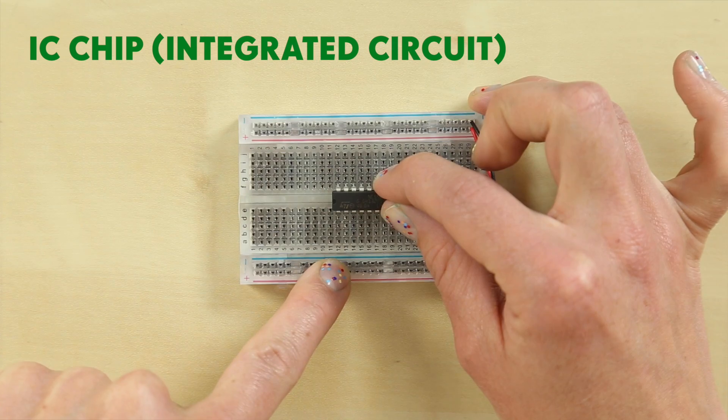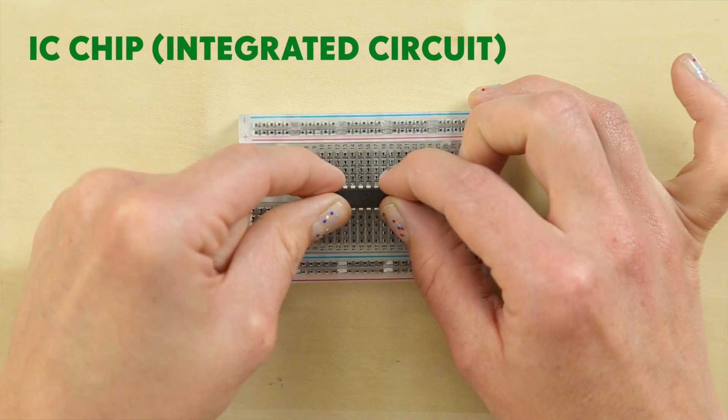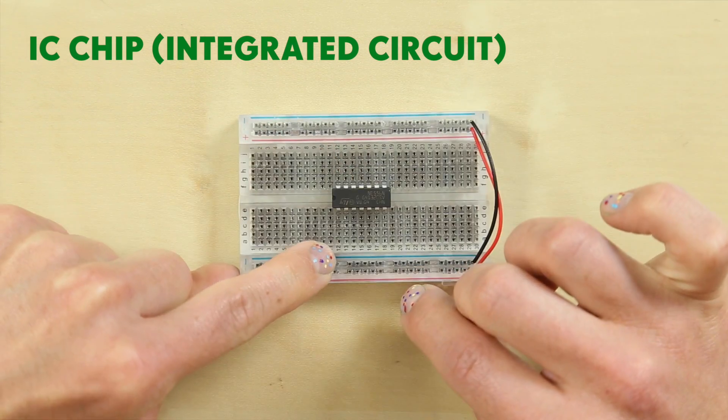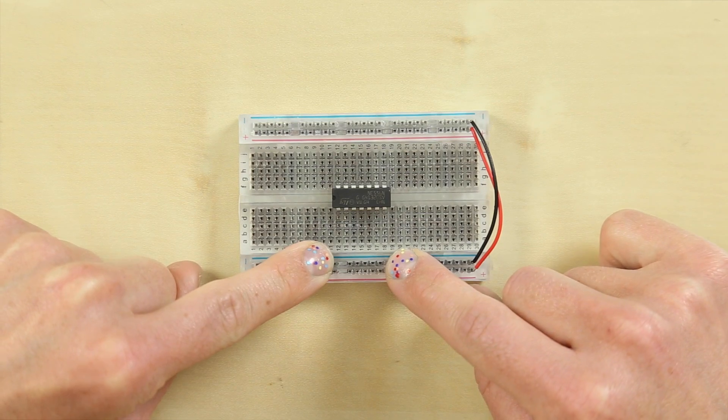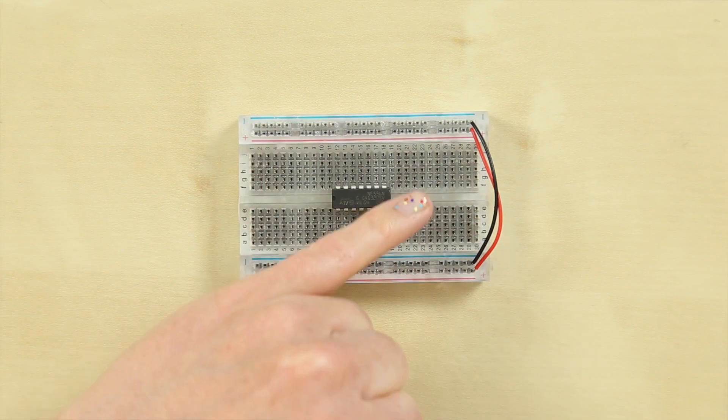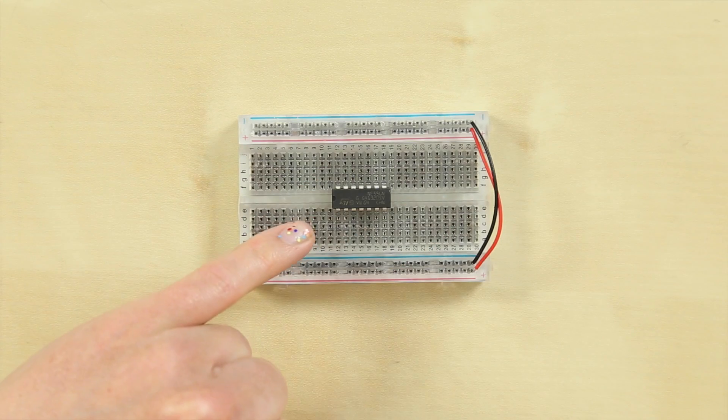If you look at the numbers on the outside of your breadboard you need to line it up with number 12. 12 at the top, 18 at the bottom. Placing your IC chip in the middle will give you plenty of room to put the other components around it.